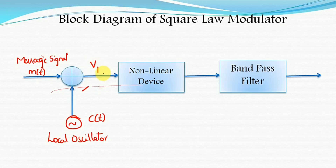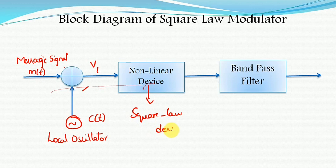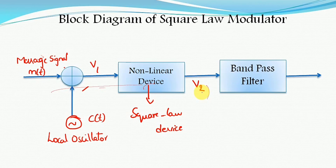The adder simply adds the two incoming signals m(t) and c(t) and produces an output v1. This signal v1 is then applied to the non-linear square law device, which generates the AM signal expression. The output of the non-linear device, v2, is passed through a band pass filter. The band pass filter allows only a certain band of frequencies and rejects others, so the final output is the AM signal, indicated as s_AM(t).